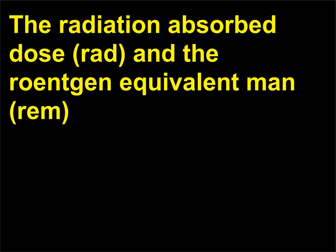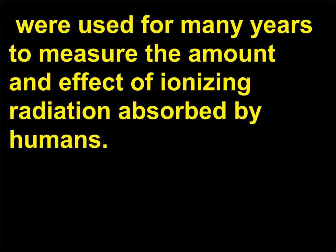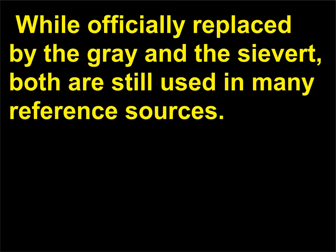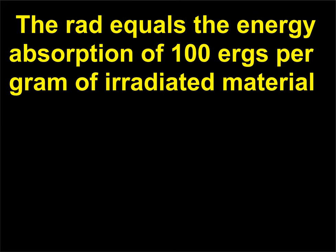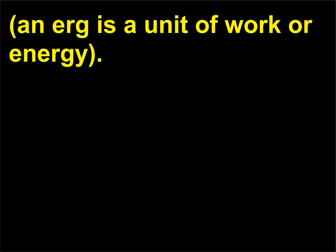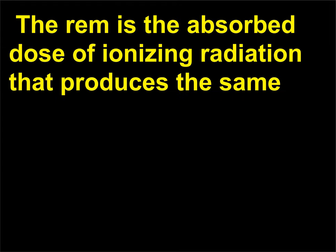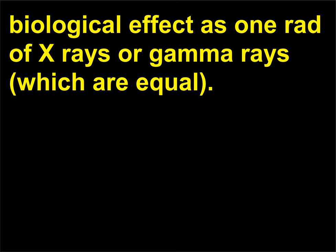The radiation-absorbed dose (rad) and the roentgen-equivalent man (rem) are used to measure the amount and effect of ionizing radiation absorbed by humans. While officially replaced by the gray and the sievert, both are still used in many reference sources. The rad equals the energy absorption of 100 ergs per gram of irradiated material. An erg is a unit of work or energy. The rem is the absorbed dose of ionizing radiation that produces the same biological effect as one rad of X-rays or gamma rays, which are equal.